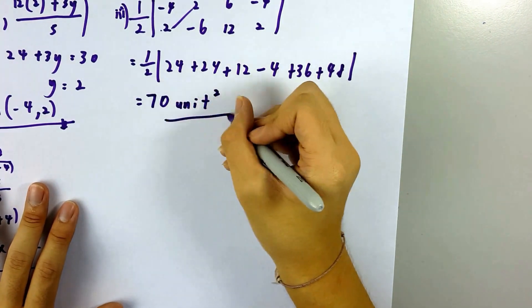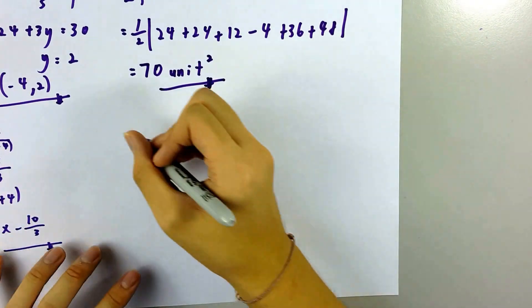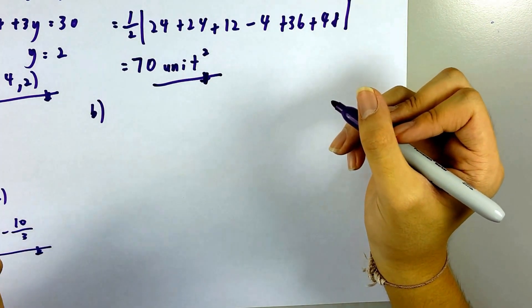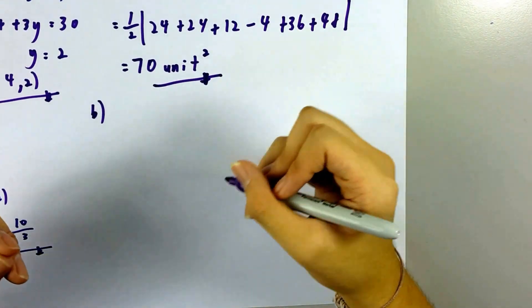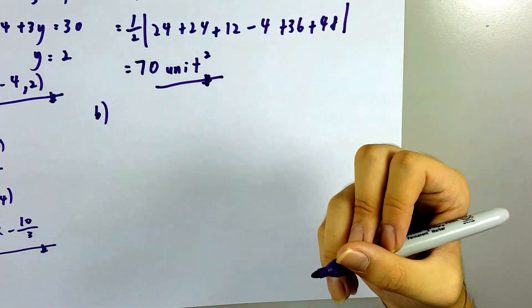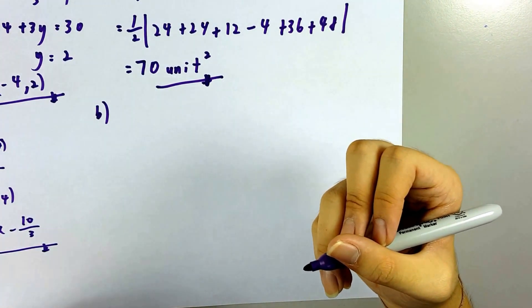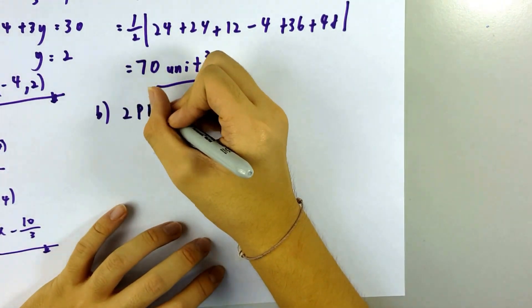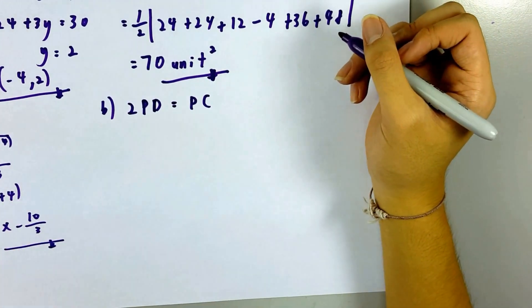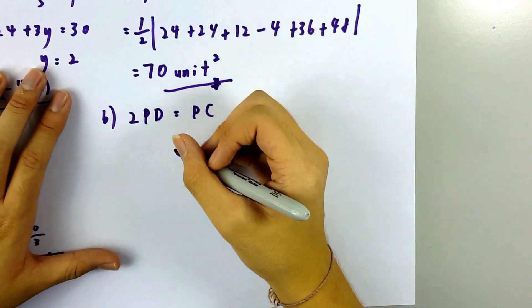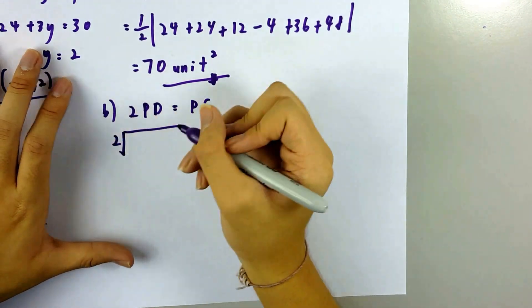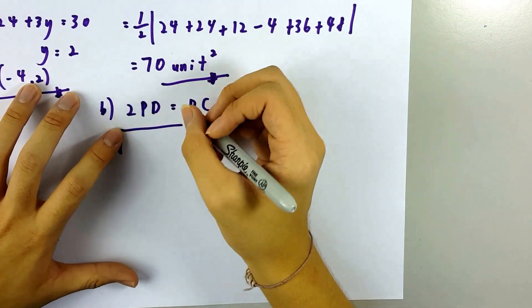Now the last part, part (iv): point P moves such that its distance from point C is always twice its distance from point D. You need to find the equation of the locus of P. PC equals 2 times PD. You write this relationship and sub in all the coordinates using the distance formula.